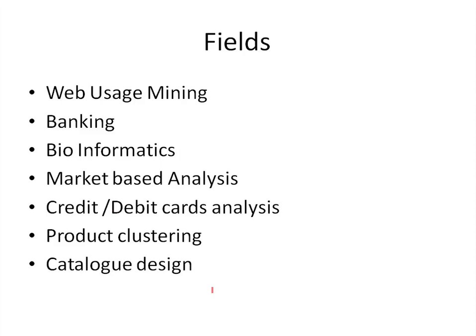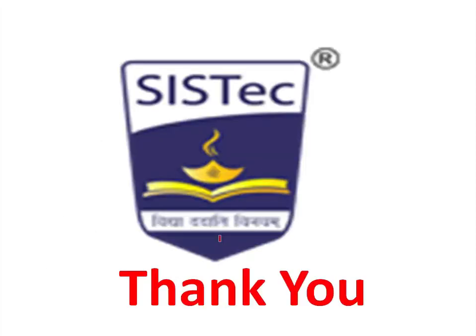Association rules can be used in many areas. One is market basket analysis, which we have already seen. Another is credit/debit card analysis — when we log in to credit/debit card sites, the spend analyzer they show us is generated on the basis of association rule mining. Additionally, association rules are used in product clustering and catalog design. This completes our association rule mining topic, and with this our Unit 3 is complete. Thank you for watching this video.